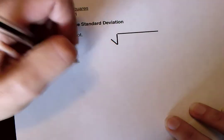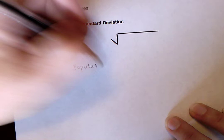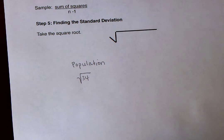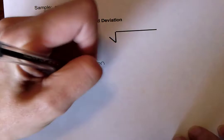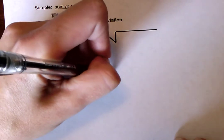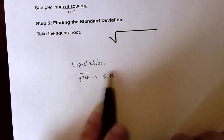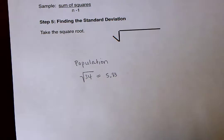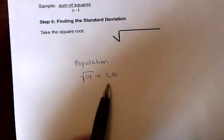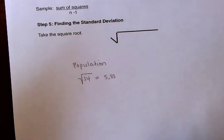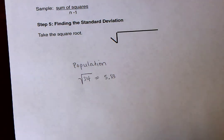And then once we did that, we would be able to find the standard deviation by taking the square root of that answer. So again, I'll just write this in here, so it's for step five. So for population, if it's a population, you would be doing the square root of 34. And the square root of 34 is 5.83. So that would be your standard deviation.